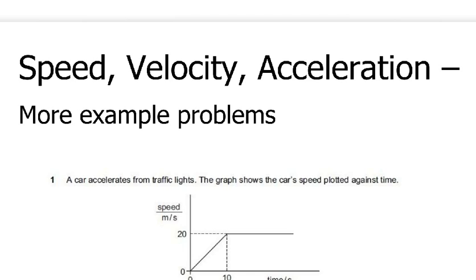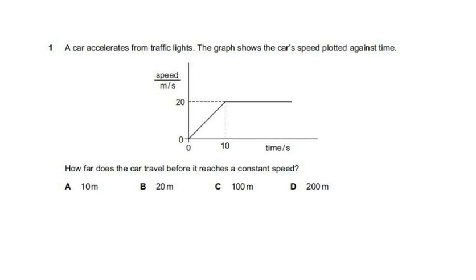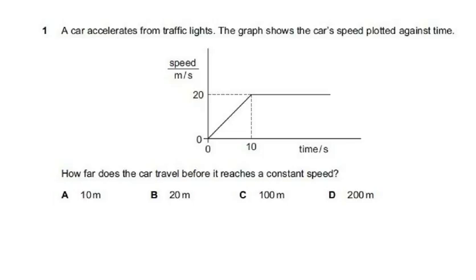Here's our first sample problem, taken from old IGCSE Cambridge exams. We have a car at a traffic light that starts to accelerate. The graph shows speed in meters per second versus time in seconds — a straight line up at an angle, then a flat line. The flat part means the speed is constant: the car is no longer accelerating.